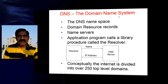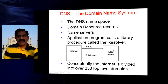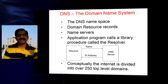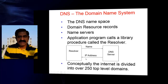The Domain Name System has a space called the DNS name space, where we map names with IP addresses. There are records at the DNS server — once you type a particular name, the DNS server gives a reply with the IP address. This process is technically called the resolver. The application program calls a library process called the resolver, and the resolver sends the name to the DNS server, which in turn returns the IP address.